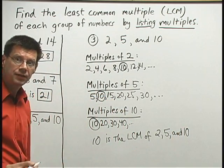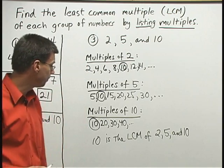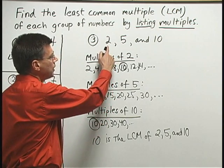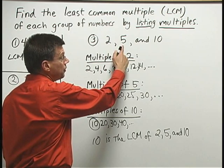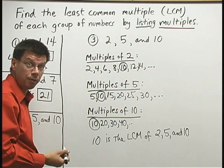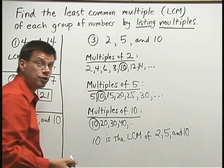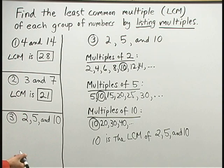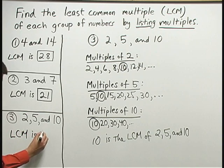Sometimes the LCM of a group of numbers actually is one of the numbers in the group. You can spot that sometimes if you notice that the smaller numbers in the group go into the larger number. If all of the smaller numbers go into the largest one, that largest one will turn out to be the LCM. So for number 3 here we have the LCM is 10.